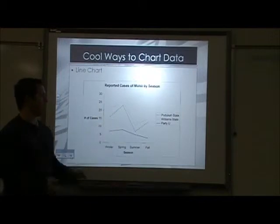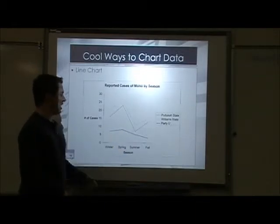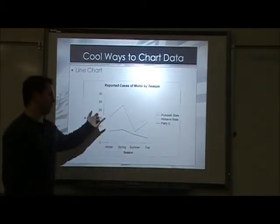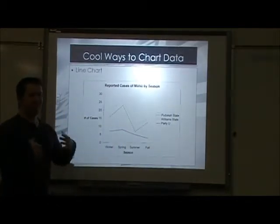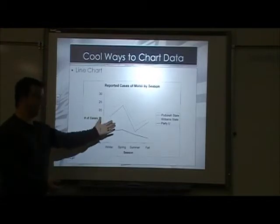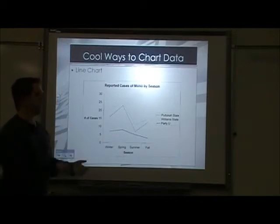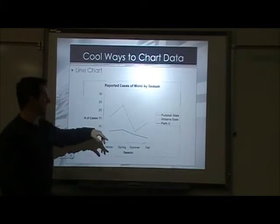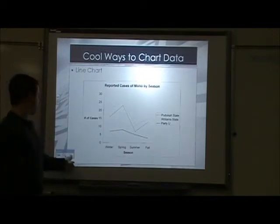Another type is line graphs. With line graphs, you plot the point. Winter had seven things, spring had eight things — you put a point there and connect the dots. Summer had about five things — connect the dots. Fall had about three things — put a point and connect the dots. Line graphs are very good at representing how data is related. You can see from winter to spring there's a significant increase, and from spring to summer there's a big fall off.